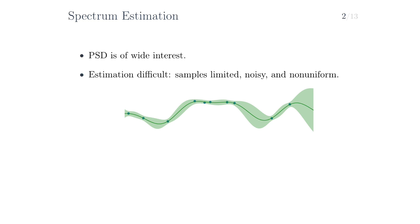Suppose that our posterior belief over the underlying function is depicted in green. Then, even at points that we sampled, we're not entirely certain about the value of the underlying function. And in between irregular samples especially, like in between these two, we can be very uncertain about the underlying function. These sources of uncertainty, if we're being properly Bayesian about this, should translate to uncertainty in our estimate of the PSD of the underlying function. Unfortunately, typically classical methods don't properly take this into account.